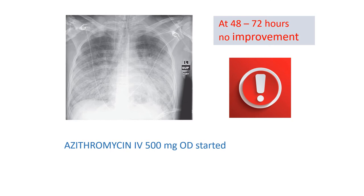We start azithromycin. Why should we not give levofloxacin? The problem with levofloxacin is that you cannot always rule out tuberculosis in an undiagnosed pneumonia — using it as a single drug can cause resistance if it is TB. Levofloxacin can also cause dysglycemia and is not ideal in younger age groups. The advantage of levofloxacin is in patients with prolonged QTc, because levofloxacin has minimal effect on QTc while azithromycin significantly increases QTc.